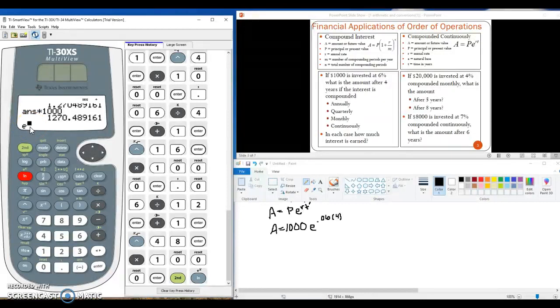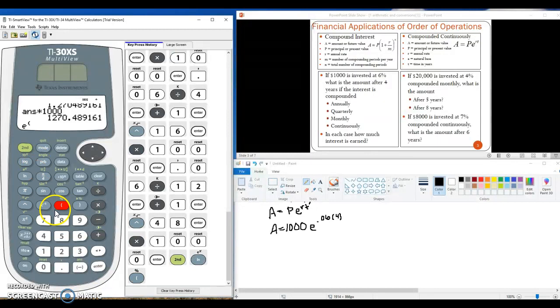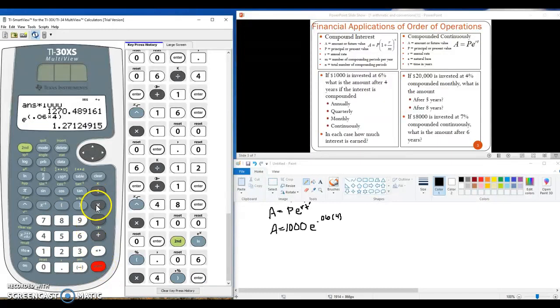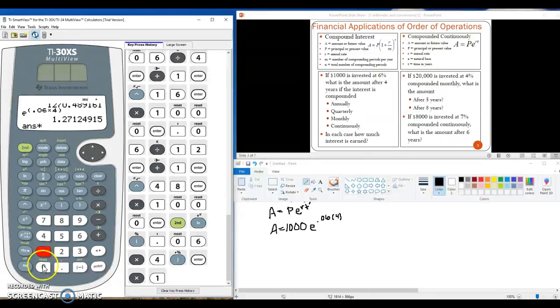Now, depending on your brand of calculator, this will vary a little bit, but most of you need to put parentheses here. So we'll do parentheses, 0.06 multiplied by 4, and then end our parentheses. We'll hit enter so that it calculates that. And then we'll take that answer times $1,000.